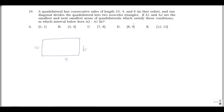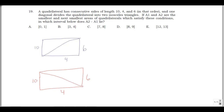We can draw a diagonal in a couple of ways. If this diagonal splits our quadrilateral into two isosceles triangles, that means the lower right triangle has two of its three sides matching. Which means the diagonal is either 4 or 6.